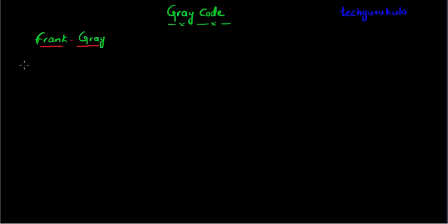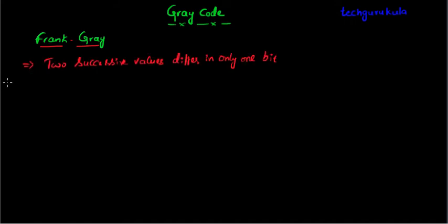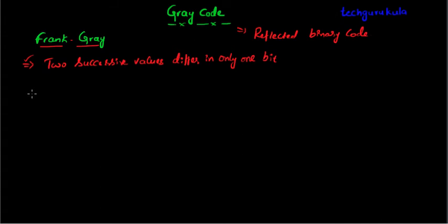The most important property of grey codes is that two successive values differ only in one bit. Let me write down that point here. We will see how to construct grey codes and after we construct them, we'll see the significance of this property. These grey codes are also known as reflected binary code. The reason why they are called reflected binary code is that it is the basic principle by which these grey codes are constructed.